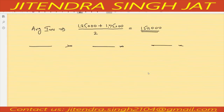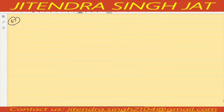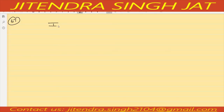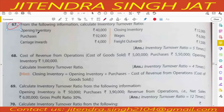Question number 67: from the following information, calculate inventory turnover ratio. We need Cost of Goods Sold and Average Inventory. Opening inventory, purchases, carriage inward, closing inventory, wages, and freight outward are given. Cost of goods sold is not given directly.